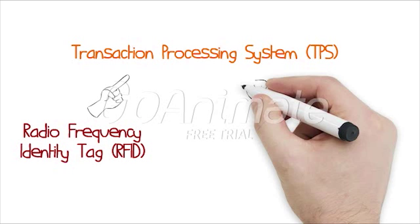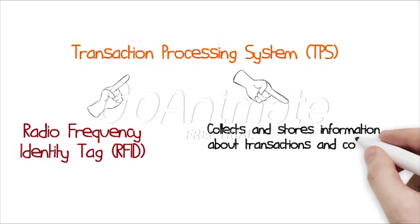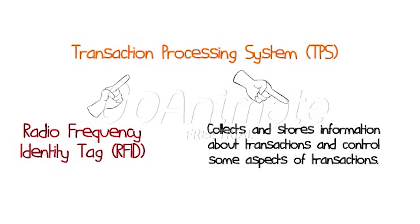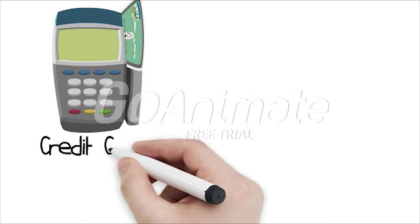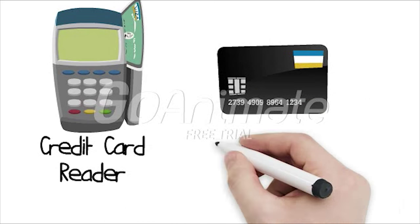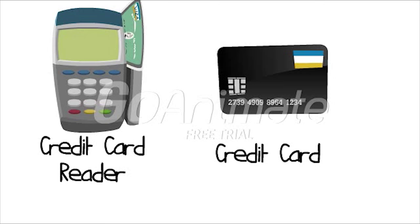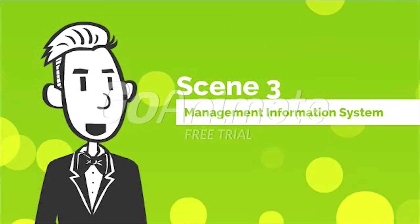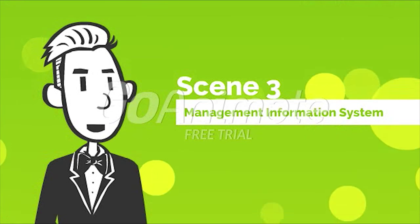It collects and stores information about transactions and controls some aspects of transactions. TPS systems commonly used in business are systems employed by major credit card companies, found in almost every retail store. It's amazing, isn't it? Now let's proceed to scene 3: Management Information System.